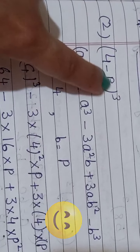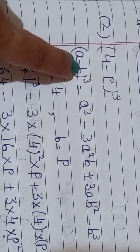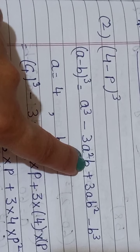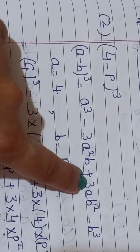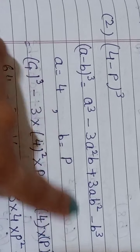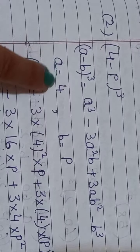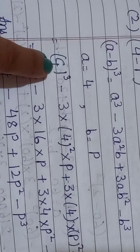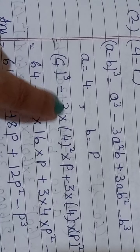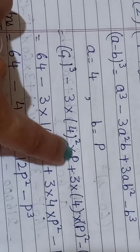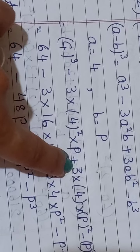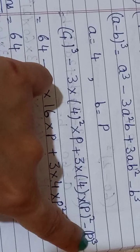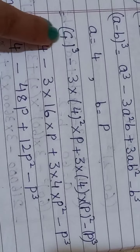Now come to the next question: (4 minus p) whole cube. Apply the formula a minus b whole cube equals a cube minus 3a squared b plus 3ab squared minus b cube, where a is equal to 4 and b is equal to p. So: 4 cube minus 3 into 4 squared multiply p, plus 3 into 4 into p squared, minus p cube.